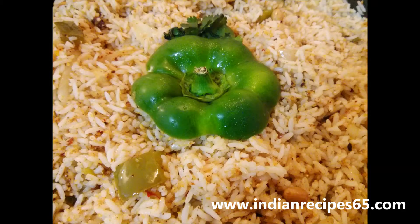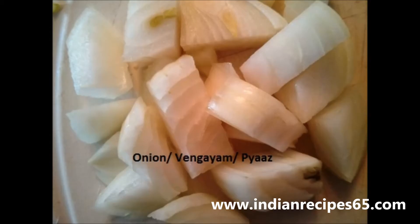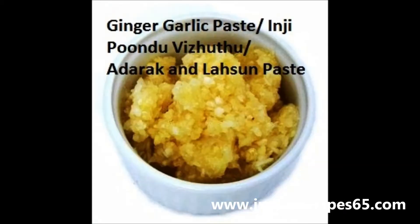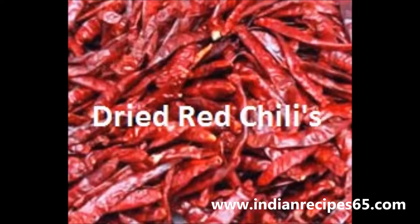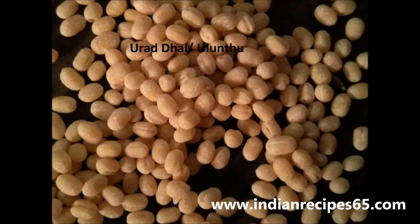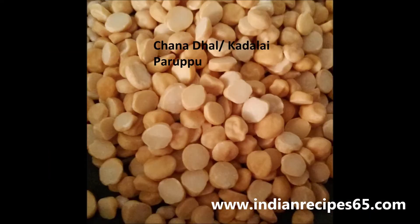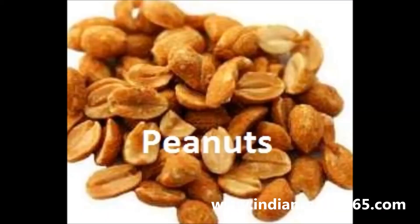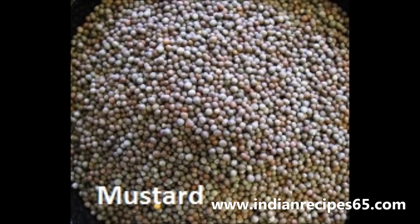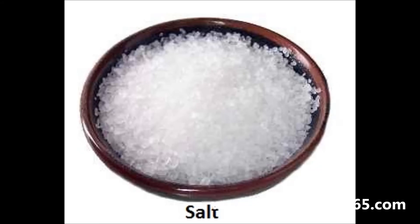Hi, today we are going to see how to make capsicum rice recipe. The ingredients required are capsicum, onions, cooked rice, ginger garlic paste, dried red chillies, coriander powder, cinnamon, cloves, urad dal, channa dal, peanuts, cumin seeds, mustard, salt, and ghee.